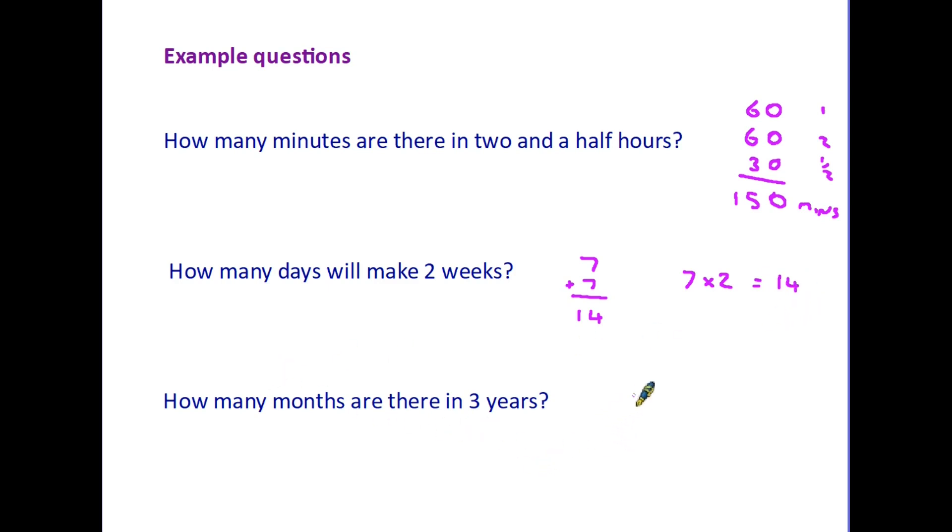How many months are there in three years? Again, two possible ways of doing this. We know that 12 months is one year. Therefore, if we multiply that by three, we would get 36 months. Alternatively, you could do it with addition. One year is 12 months, another year is 12 months, and another year is 12 months. Add them together, and again we get 36 months.